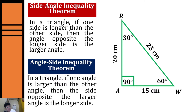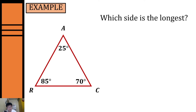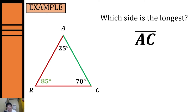Now let's have some examples applying Side Angle and Angle Side Inequality Theorem. For our first example, we're given a triangle and we need to identify which side is the longest. Given the angles, our largest angle is 85 degrees — that is angle R. According to the Angle Side Inequality Theorem, the side opposite our larger angle will be the longer side, so side AC will be the longest side.